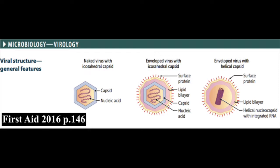Enveloped viruses are either icosahedral or helical. Enveloped icosahedral viruses look identical to naked icosahedral viruses except that their nucleocapsid is surrounded by an envelope made of a lipid bilayer. This lipid bilayer contains surface proteins that aid in target recognition and binding. Enveloped helical viruses also have an envelope, but their capsid is made of matrix or core protein that surrounds the nucleic acid genome, which is bound to nucleocapsid proteins.